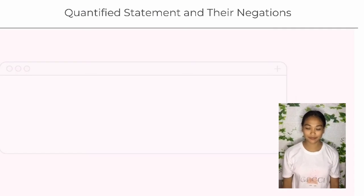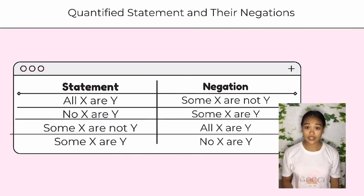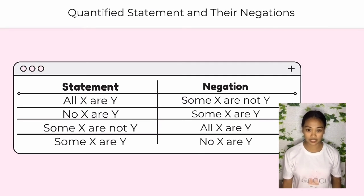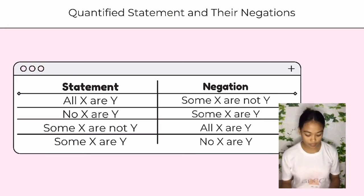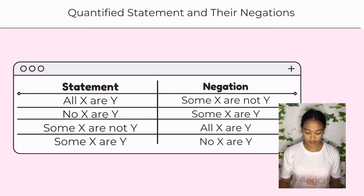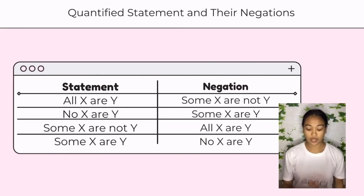Hi, I'm Shiji. This is the table of quantified statements and their negations. This table will serve as our guide. Statement 1: 'All x are y' — negation: 'Some x are not y.' Statement 2: 'No x are y' — negation: 'Some x are y.' Statement 3: 'Some x are not y' — negation: 'All x are y.' Statement 4: 'Some x are y' — negation: 'No x are y.'